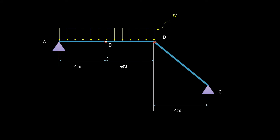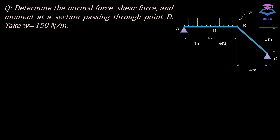In the previous video we learned about the internal forces and their sign convention. In this video we'll apply those concepts to a question and try to find the internal forces at a certain point in this frame. The question asks us to determine the normal force, shear force, and moment at a section passing through point D, given that W is equal to 150 N/m. So we have to find the internal forces at point D.